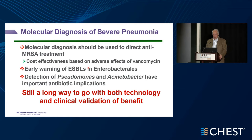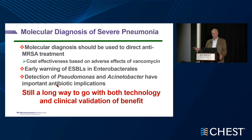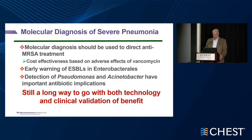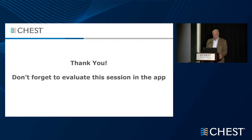In summary, molecular diagnosis should be used to direct all anti-MRSA therapy — we shouldn't be using much empiric vancomycin and linezolid. Early warning of ESBLs in Enterobacterales is critically important — jumping to meropenem rather than cefepime or piperacillin-tazobactam. Detection of pseudomonas and acinetobacter has very important antibiotic implications; at our institution, none of our acinetobacter is susceptible to carbapenem, so we jump to other agents immediately. We still have a long way to go with the technology and clinical validation of benefit. Thank you.